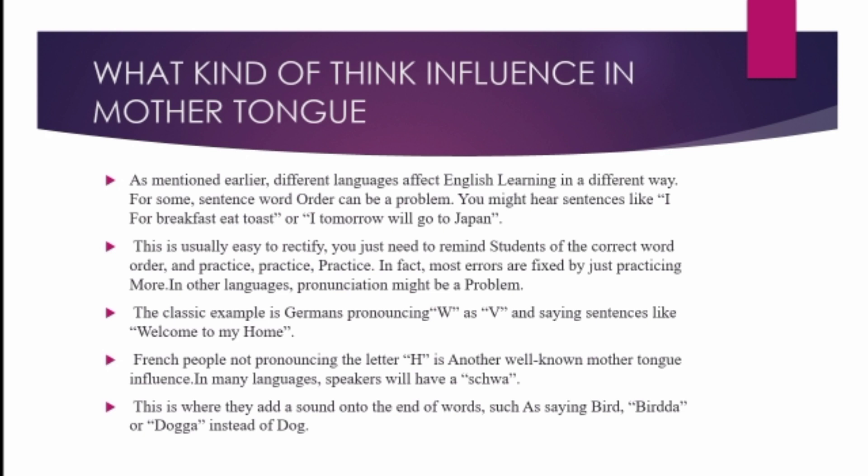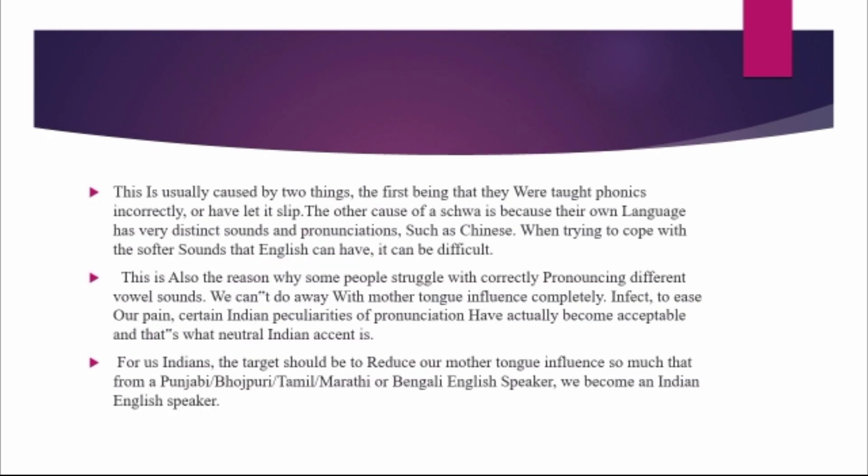In other languages, pronunciation might be a problem. The classic example is Germans producing W as V and saying sentences like 'Welcome to my home.' This is usually caused by two things: the first being that they were taught phonics incorrectly, and the other being that their own language has very distinct sounds and pronunciation — such as Chinese — making it difficult to cope with the softer sounds that English can have. This is also the reason why some people struggle with correctly pronouncing different vowel sounds. We can't do away with mother tongue influence completely.